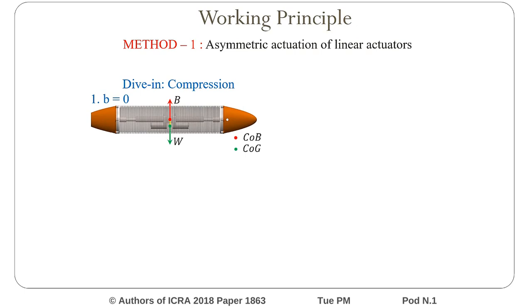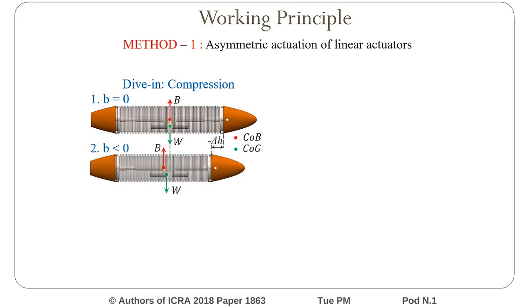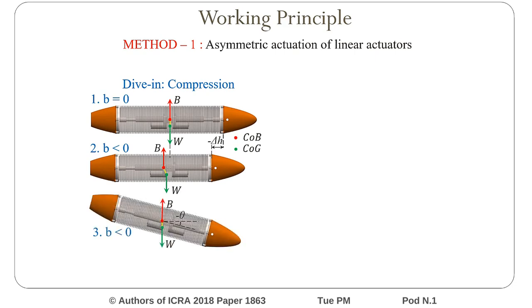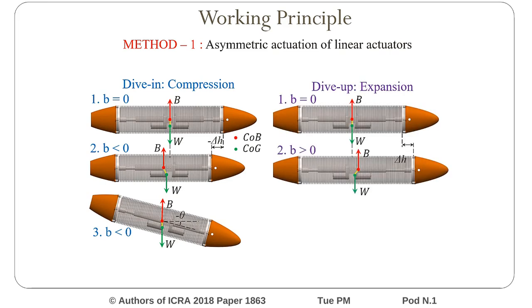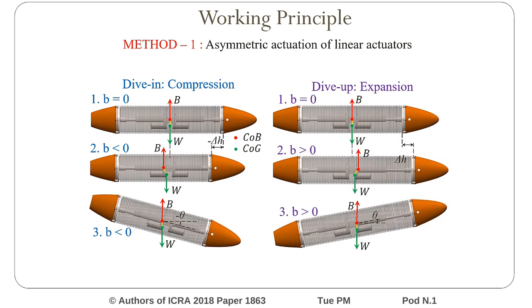Initially, when the system is neutrally buoyant, the locations of the center of gravity and center of buoyancy are aligned. By compressing the metallic bellow using the linear actuator towards the nose, the system becomes negatively buoyant, with a shift in the locations of center of gravity and center of buoyancy. This dislocation results in a restoring moment causing a pitch, and the negative buoyancy results in a heave motion. Using a wing, the heave motion is vectored to result in a surge motion, hence dive-in motion is achieved. Similarly, by expanding the linear actuator, the system can be made positively buoyant and dive-up motion can be achieved.